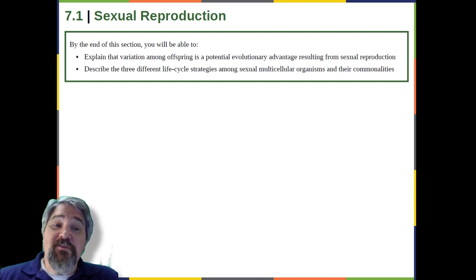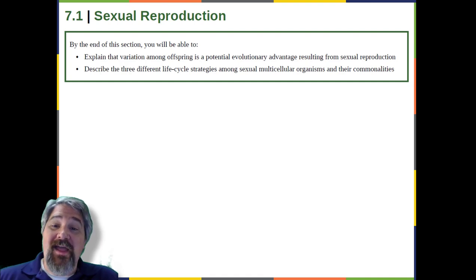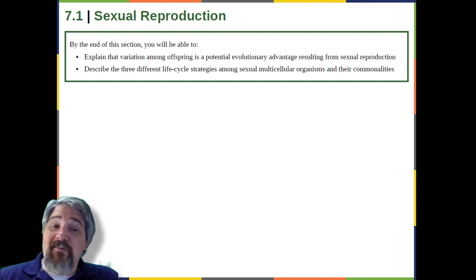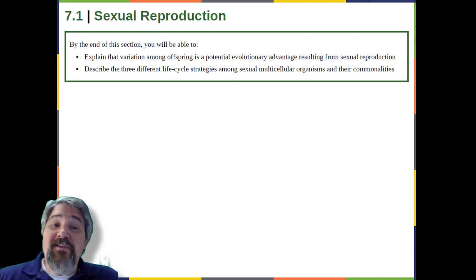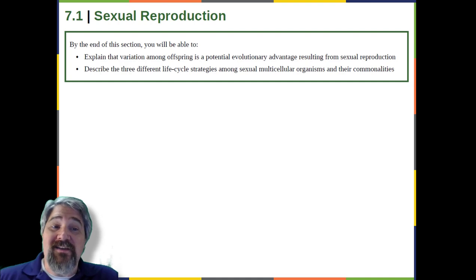On the surface, offspring that are genetically identical to the parent may appear to be more advantageous. If the parent organism is successfully occupying a habitat, offspring with the same traits would be similarly successful. There is also the obvious benefit to an organism that can produce offspring by asexual budding, fragmentation, or asexual eggs. These methods of reproduction do not require another organism of the opposite sex. There is no need to expend energy finding or attracting a mate. That energy can be spent on producing more offspring.